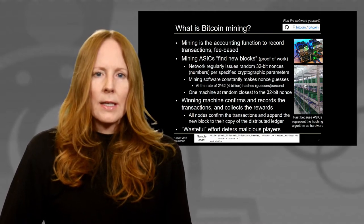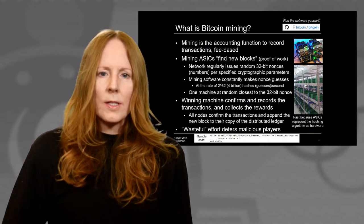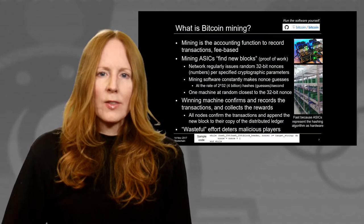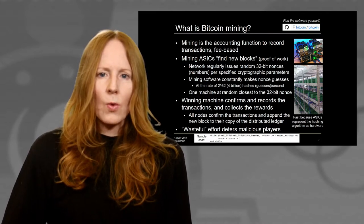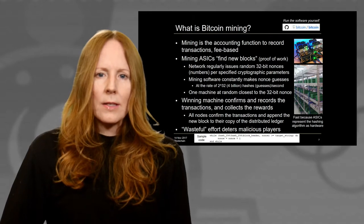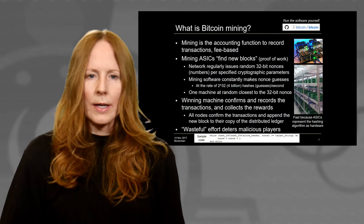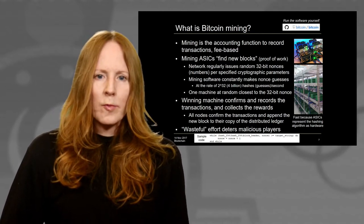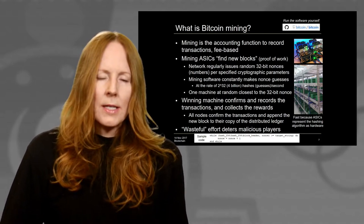Bitcoin mining is the accounting function to record the transactions. It's fee-based. It works in the way that mining ASICs find and discover new blocks with a proof-of-work software mechanism. The network regularly issues random 32-bit nonces for specified cryptographic parameters, and the mining software and hardware constantly makes nonce guesses at a rate of 4 billion per second. One machine at random guesses the correct random number and wins the ability to confirm and record the transactions and update the other nodes. The wasteful effort makes the system very secure.